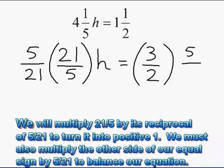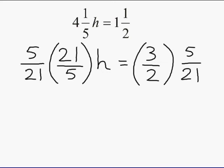To balance our equation, we must multiply the other side by 5 over 21 as well, because what you do to the left side, you must do to the right side. So you can see that the 21s cancel out and the 5s cancel out, leaving us with positive 1h on the left.